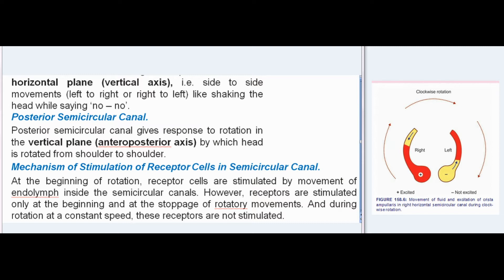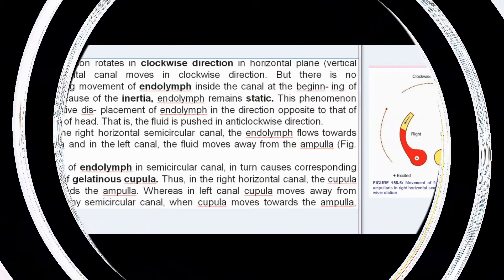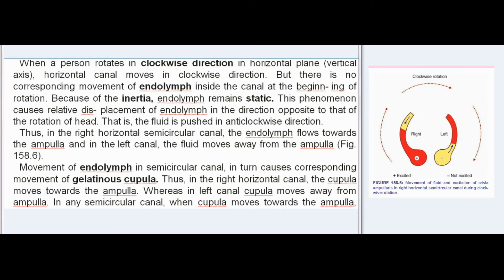Mechanism of stimulation: at the beginning of rotation, receptor cells are stimulated by movement of endolymph inside the semicircular canals. However, receptors are stimulated only at the beginning and at the stoppage of rotatory movement — not during rotation at constant speed. When a person rotates clockwise in the horizontal plane, the horizontal canal moves clockwise, but endolymph remains static due to inertia, causing relative displacement in the anti-clockwise direction. In the right horizontal semicircular canal, endolymph flows towards the ampulla; in the left canal, it moves away from the ampulla.